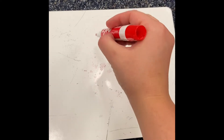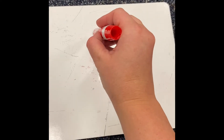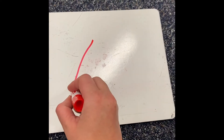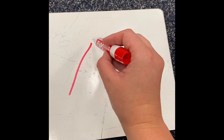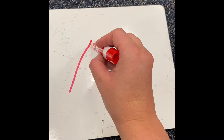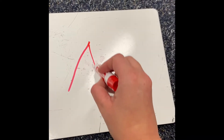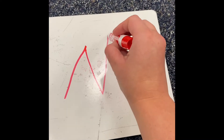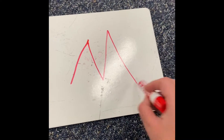When we write the letter M, we start at the top, do a diagonal line down, jump back to the top, do another diagonal line to the bottom, jump back up, and jump down.